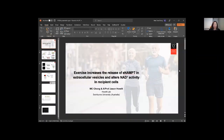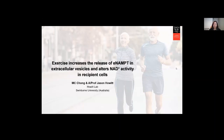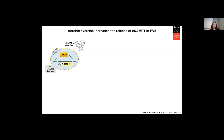I'm MC from Swinburne University, Melbourne, Australia. Today I'll be sharing some of our work in aging and NAD metabolism. NAMPT is one of the rate-limiting enzymes that regulates NAD production. NAD is an essential cofactor involved in multiple cell processes and has an impact in aging. Previous studies have shown that the circulating form of NAMPT, or E-NAMPT, is exclusively contained within EVs, and the amount of E-NAMPT within EVs has been shown to decline with age in humans, causing decreased production of NAD.